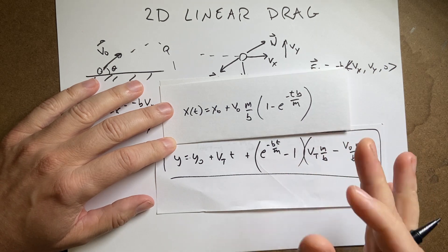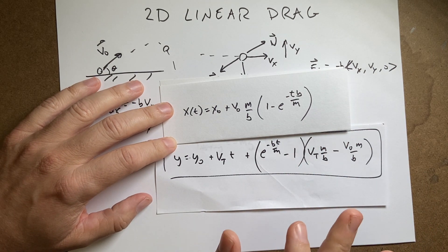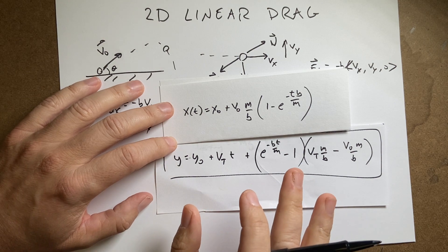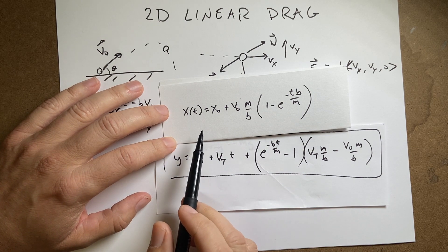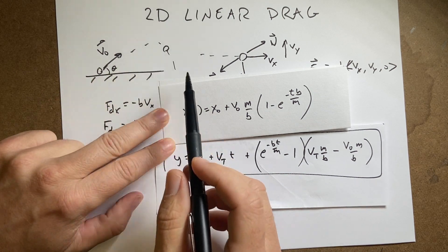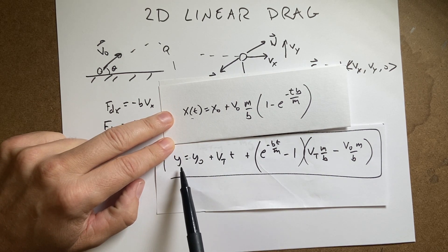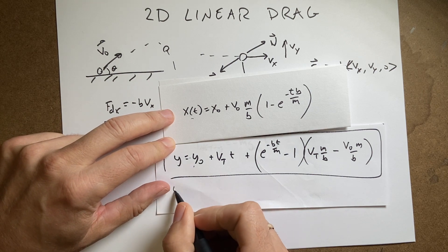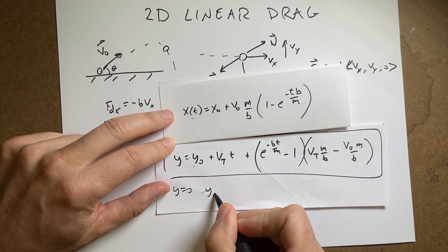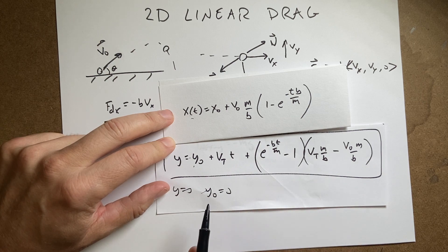So I can solve this. What if it's, it's complicated and I'm not going to actually set it up all the way. I'm just telling you how to do it. So let's say I want to find like the range, how far it goes. Well, I can solve, use this one and solve for the time it takes for Y to get back to zero. So I can put Y equals zero, Y zero equals zero, and then solve this for time.